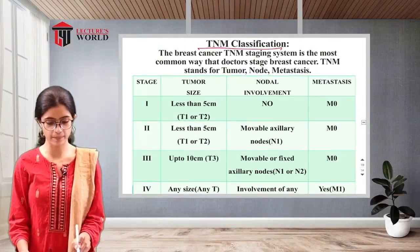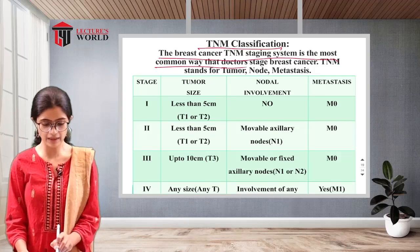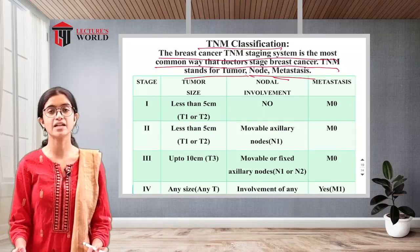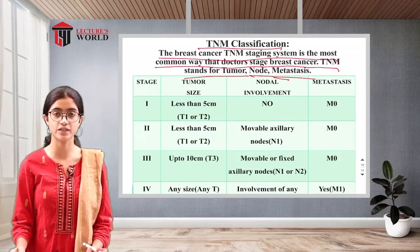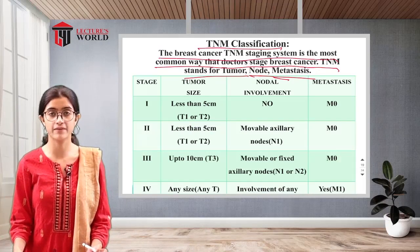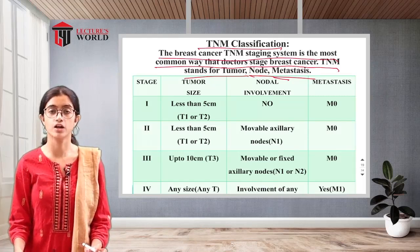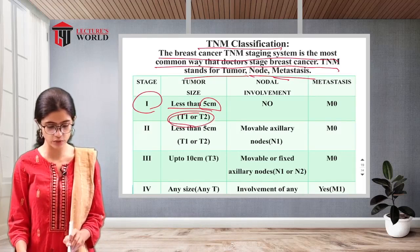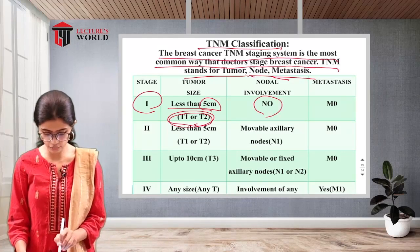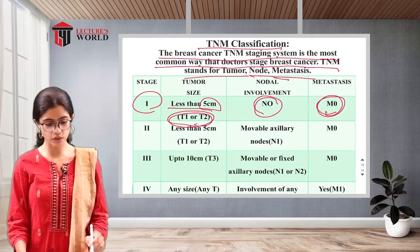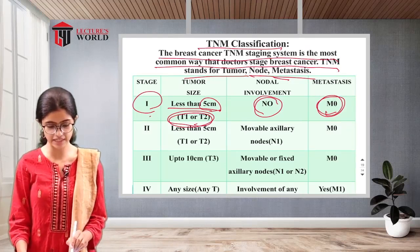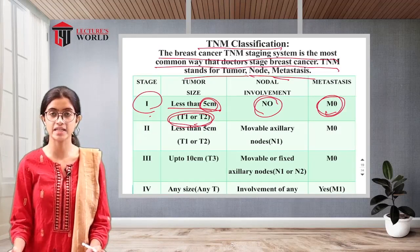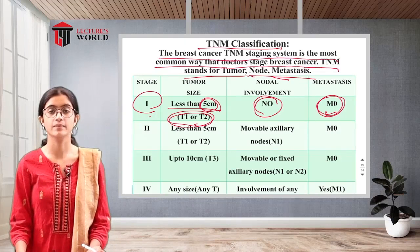The TNM classification is the most common way doctors stage breast cancer. TNM stands for tumor, node, and metastasis. In stage 1, the tumor size is less than 5 cm (T1 or T2), there is no node involvement (N0), and no metastasis (M0).